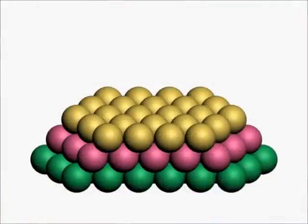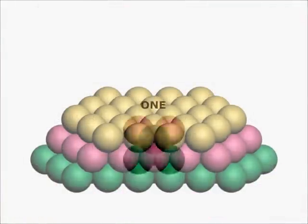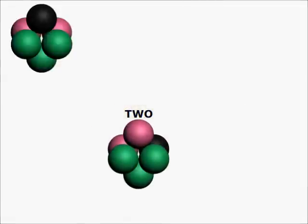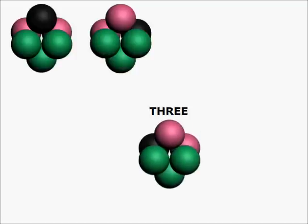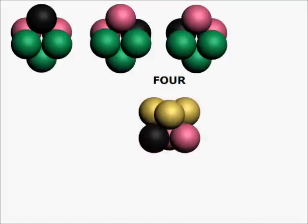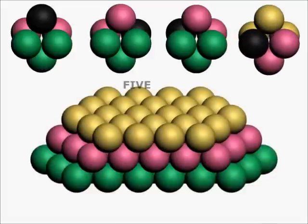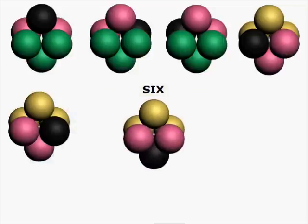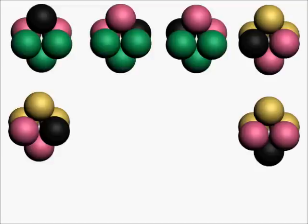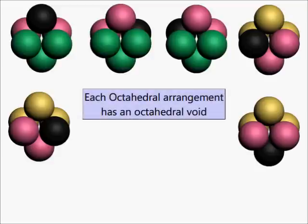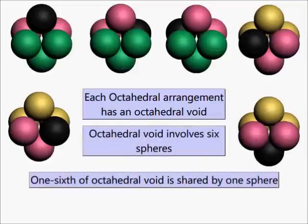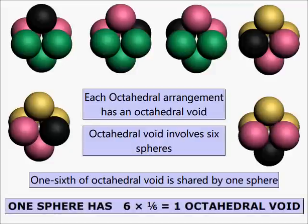Now let us count the number of octahedral arrangements involving this sphere. It is 6. Each octahedral arrangement has an octahedral void involving 6 spheres. Therefore, 1/6 of an octahedral void is shared by one single sphere. Therefore, one sphere has 6 × 1/6, which is equal to 1 octahedral void.